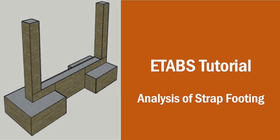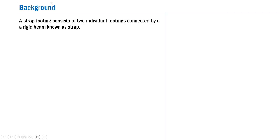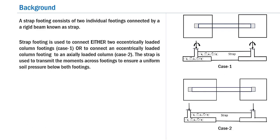Let me first provide a brief description on the strap footing. A strap footing essentially consists of two individual footings connected by a rigid beam known as a strap, and hence the name strap footing. A strap footing is used to connect either two eccentrically loaded column footings or to connect an eccentrically loaded column footing to an axially loaded column. In both cases, the function of the strap is to transmit the moments across footings to ensure a uniform soil pressure below both footings.